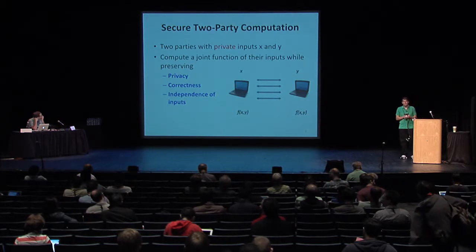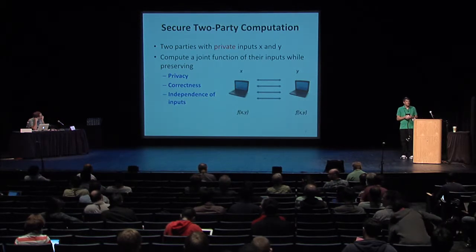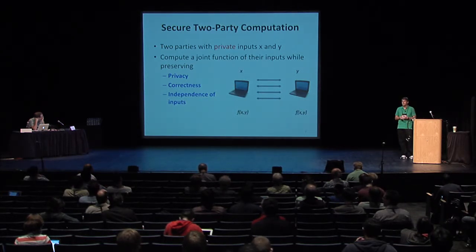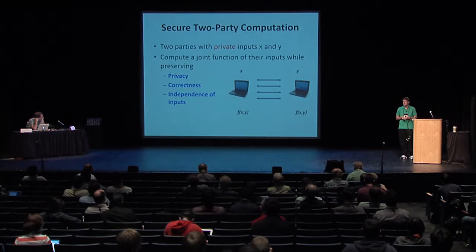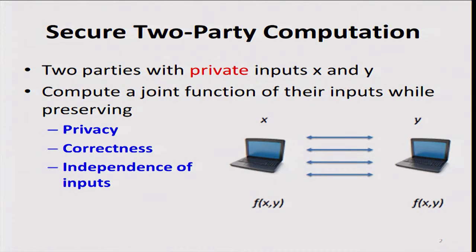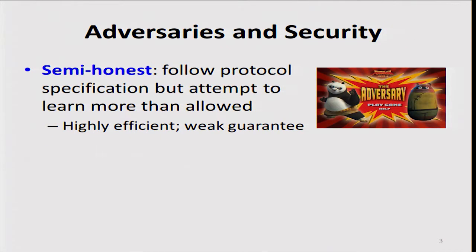We're talking about secure two-party computation, where we have two parties with private inputs X and Y, and they wish to compute some function of their inputs while preserving certain security properties like privacy, correctness, and independence of inputs. This is a widely studied topic, and actually a very hot topic now, as Ran mentioned last night in the Rump session, so I think everyone's familiar with the basic concept.